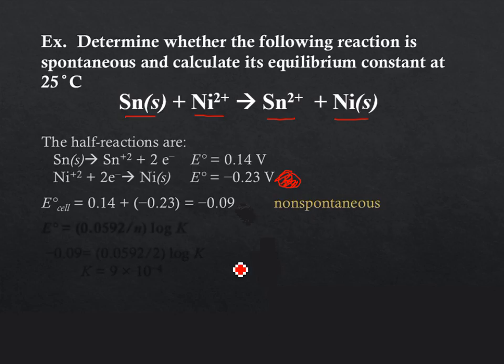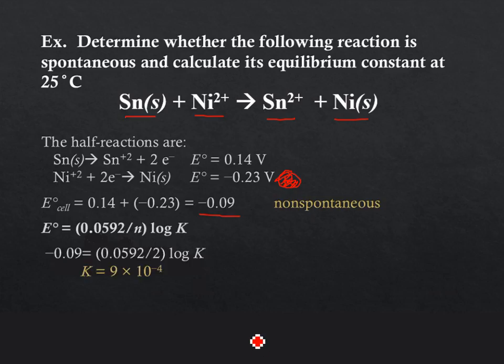So, what we have to do then is given our cell potential under standard conditions, we can use the formula on the previous page to calculate K. And there we have it. And this cell potential, sorry, this K value tells us that since it's a very small number, that this reaction is not very thermodynamically favorable, which is, of course, true. We already know that because our cell potential is negative.